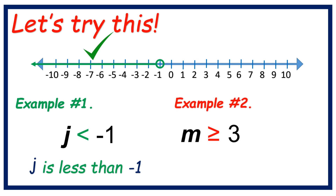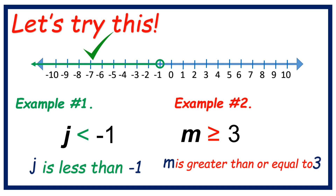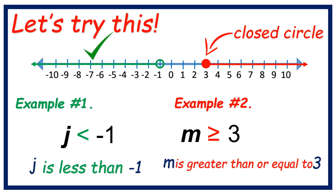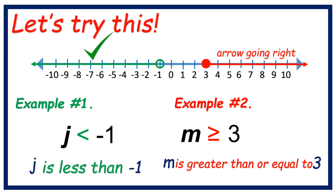Example number 2: M is greater than or equal to 3. How are we going to answer this? First, look for number 3. Put a closed circle, and decide whether it is going left or right. Look at the symbol — the symbol is going right. Arrow going right. That's it, you got it.